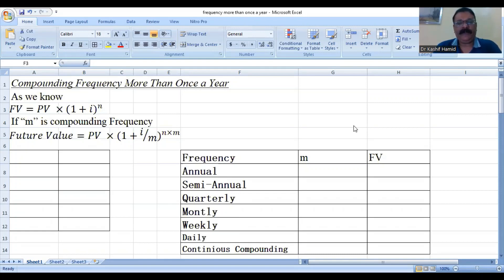In last lecture, we performed computation regarding future values. As we know that future value is equal to present value multiplied 1 plus i, for power n. If m is compounding frequency,